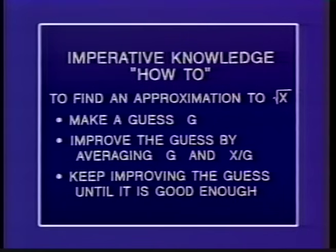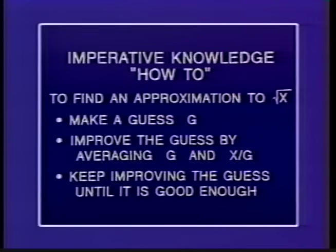How you might find a square root — this comes from Egypt, an algorithm due to Heron of Alexandria called how to find a square root by successive averaging. To find a square root, you make a guess, you improve that guess by averaging the guess and x over the guess, and you keep improving the guess until it's good enough. That's a method — how to do something, as opposed to declarative knowledge that says what you're looking for. That's a process.